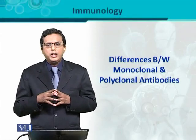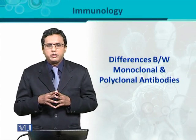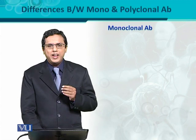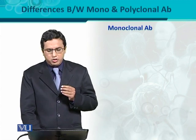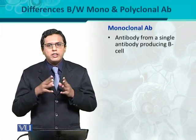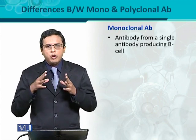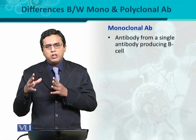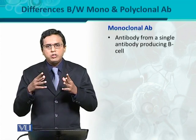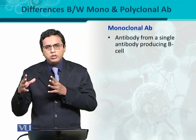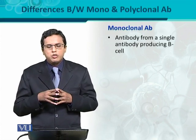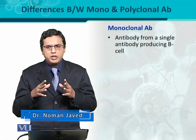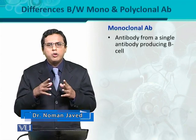Differences between the monoclonal and polyclonal antibodies. What is meant by monoclonal and polyclonal antibody? First of all, monoclonal antibodies — as the name suggests, 'mono' means single, and 'clone' means different kinds of clones of the B cells which are going to produce the antibody-producing cell. Those antibodies which are produced from a single antibody-producing B cell are called monoclonal antibodies.